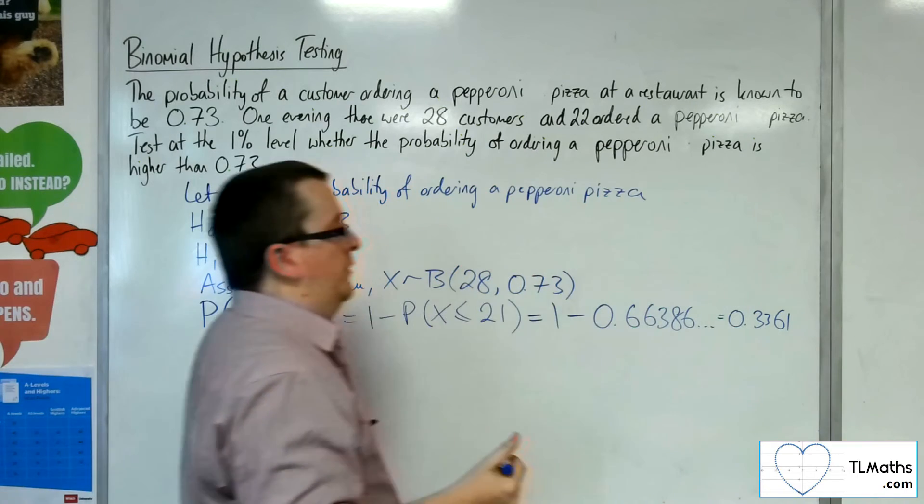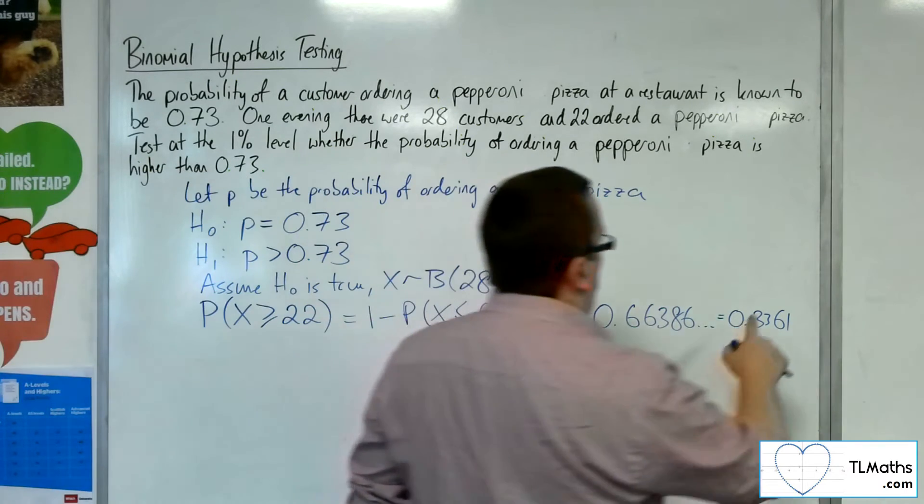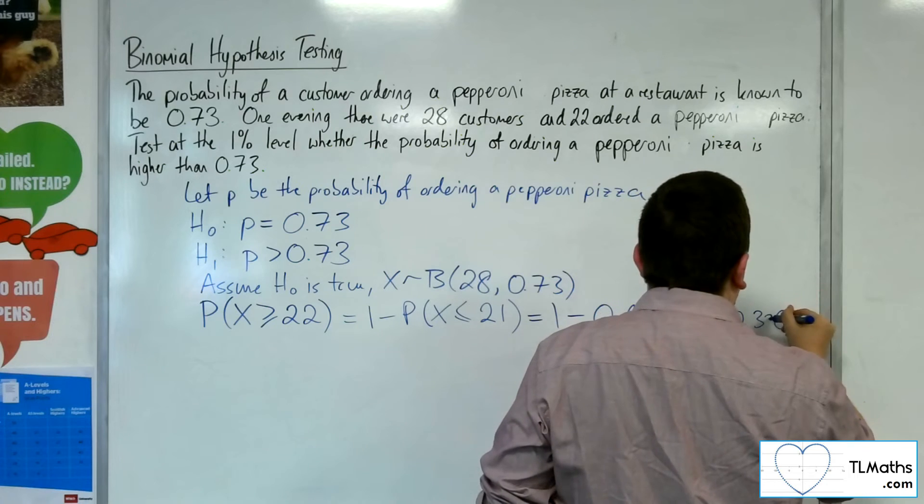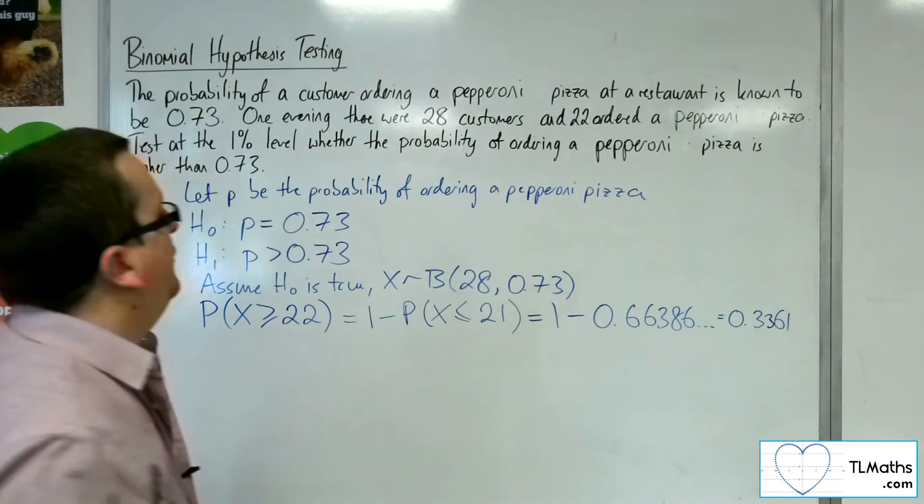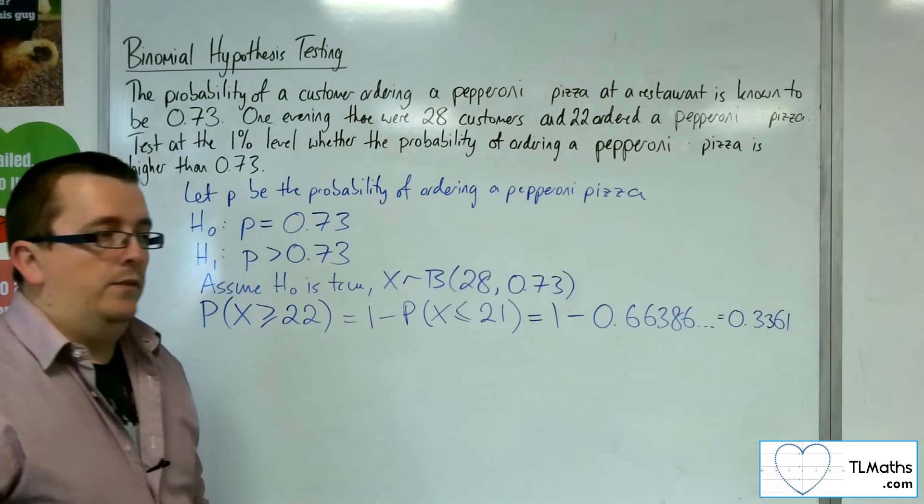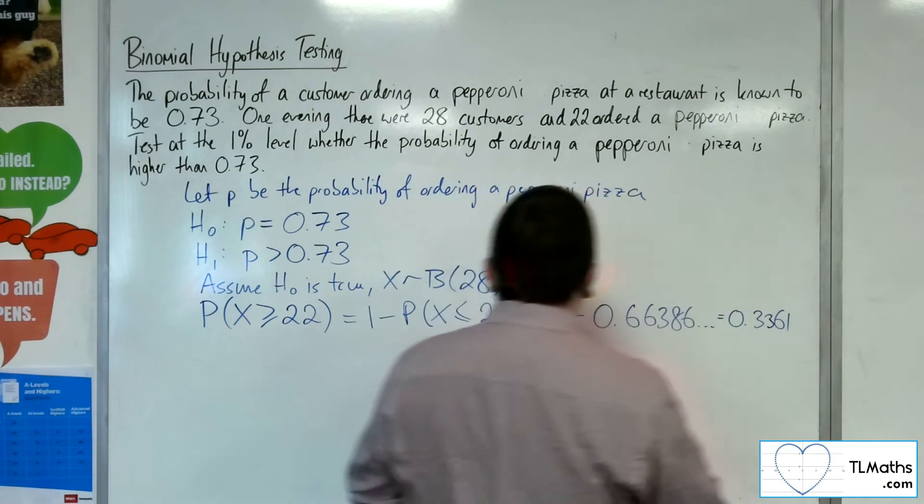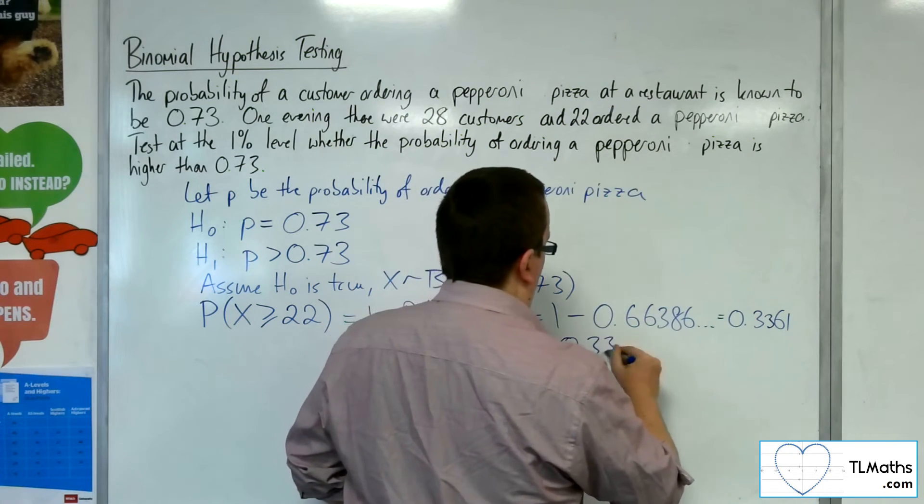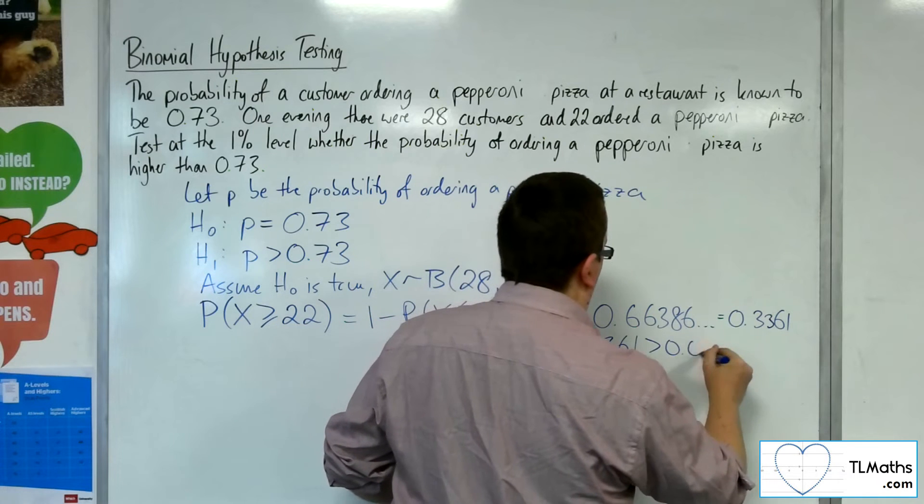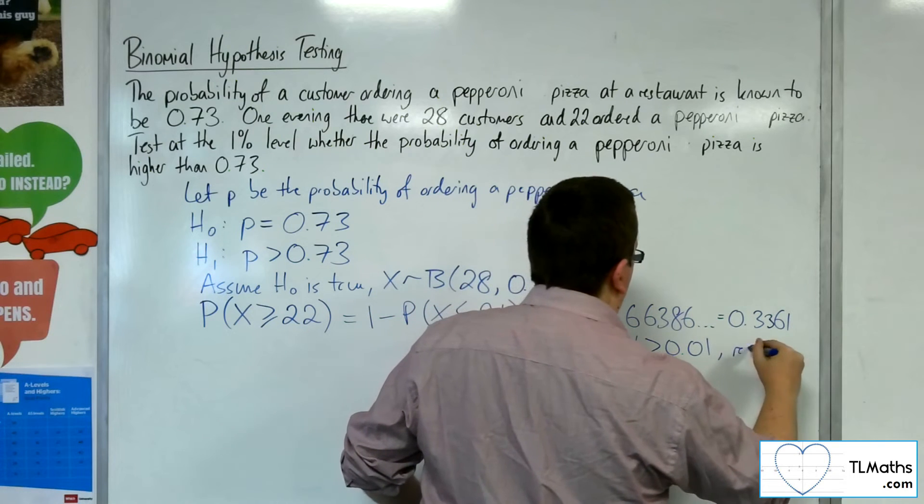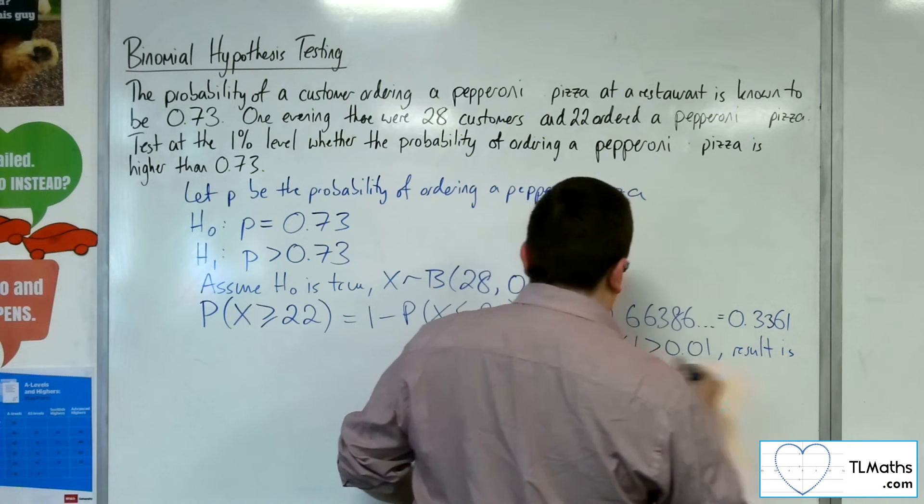0.3361 is clearly greater than the 1% significance level. 0.3361 > 0.01, so the result is not significant.